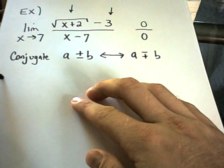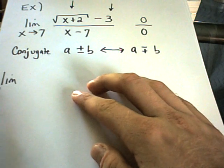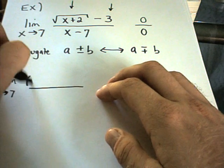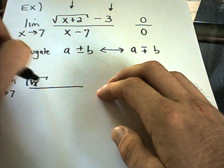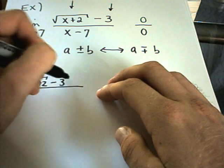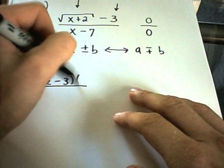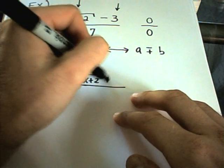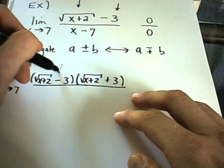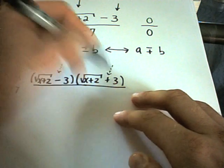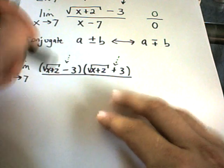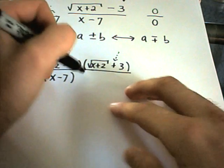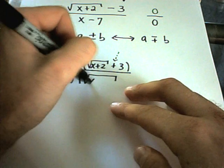I'm going to multiply top and bottom by the conjugate of the numerator. I've got √(x+2) - 3, and I'm going to multiply that by the conjugate, which is √(x+2) + 3. The sign in the middle is what has changed. I've got x - 7 on the bottom. If you multiply the top by something, you have to multiply the bottom by that same something as well.